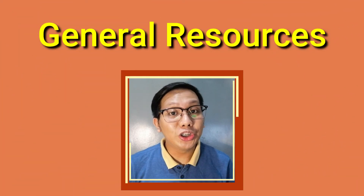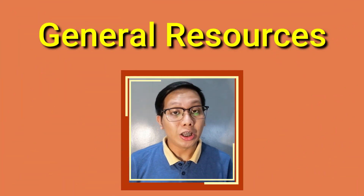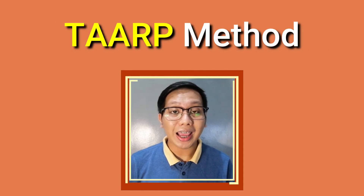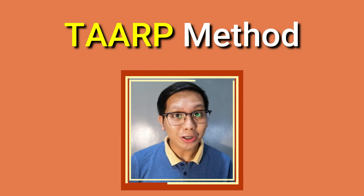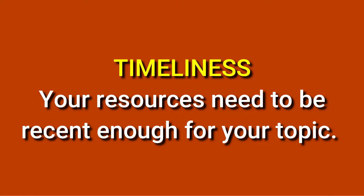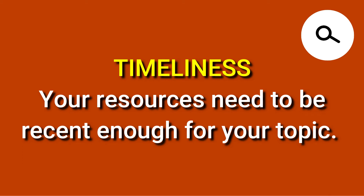First are the general resources. Using the TAARP method, here are the things that you need to check. T is for timeliness. Your resources need to be recent enough for your topic. If your paper is about technology, for example, you can no longer discuss about the ones that existed in the 1990s, not unless your paper talks about computer history.